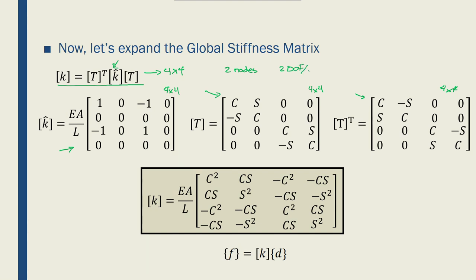Right? Or per node. We have d1x and we have d1y. So 2 multiplied by 2 gives me 4, which means I need to have a 4x4 stiffness matrix in the global coordinate system. And that's what holds this true.